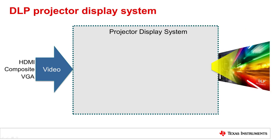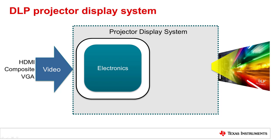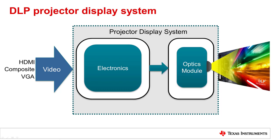Going one layer deeper, we see that a DLP projector display system actually has two subsystems: the electronics module and the optics module. In the simplest terms, the electronics module performs the video processing, and the optics module handles the content projection.